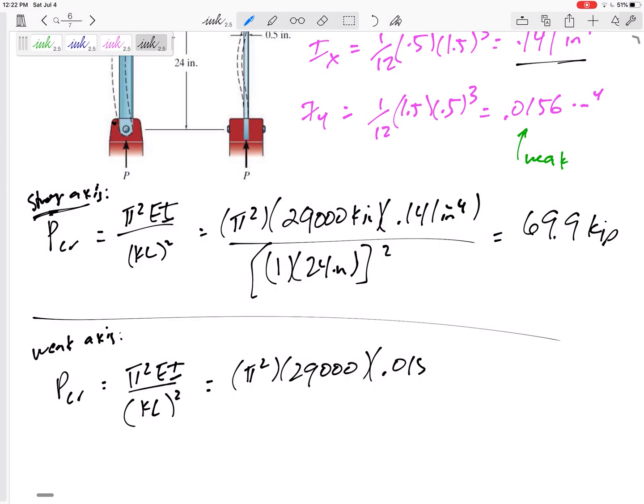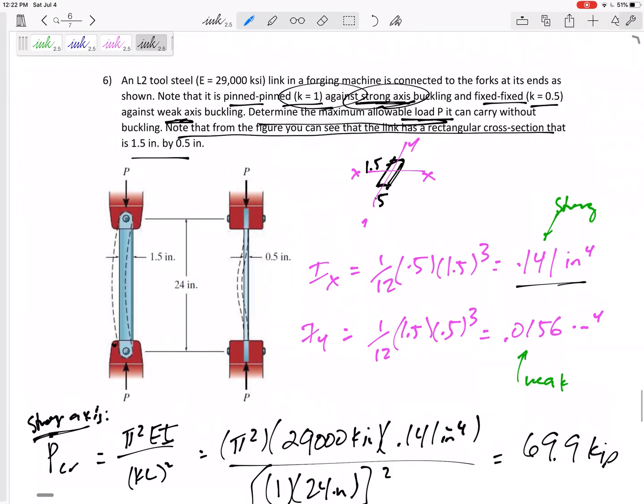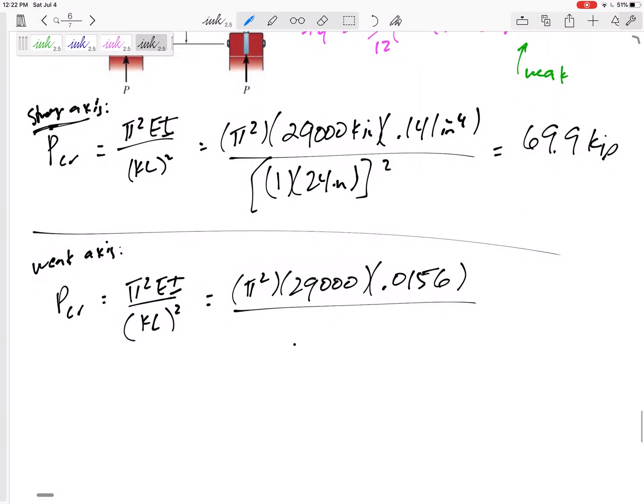It has an I of 0.0156. And then this has a K - it's fixed-fixed against weak axis buckling, so it is 0.5 times 24. Be sure to square the 0.5 and the 24. So this would give us a force of 31.1 Kips.